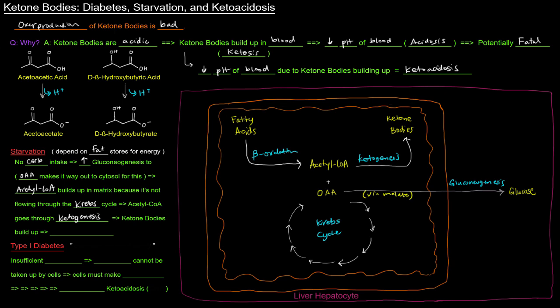So I'll write that here, ketogenesis, and it'll go to producing ketone bodies. And so what will happen is that these ketone bodies will then be sent out of the cell into the blood and then to the extra hepatic tissues. Now those tissues, of course, will use them for energy.